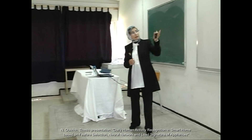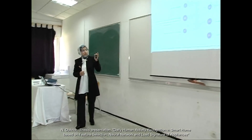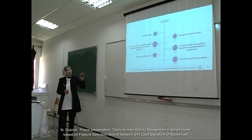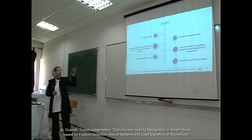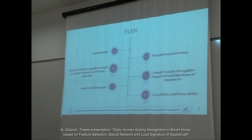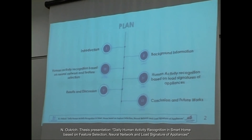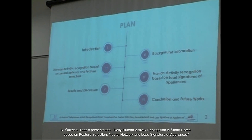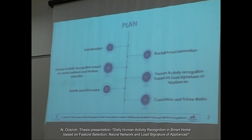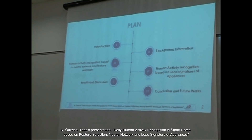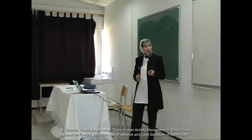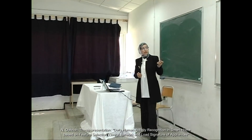The plan of this presentation is, as you see here, I would like to talk about six key points. First, introduction, then background information. The third point is Human Exhibitor Cognition based on neural network and feature selection. The fourth is Human Exhibitor Cognition based on neural signature of our students. The fifth key point is result and discussion. And finally, conclusion and future work.